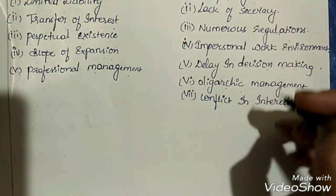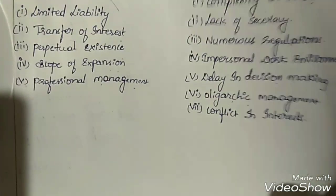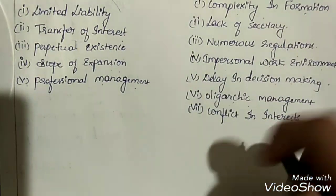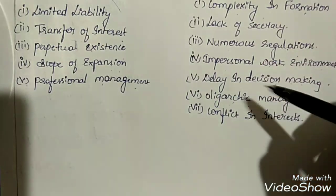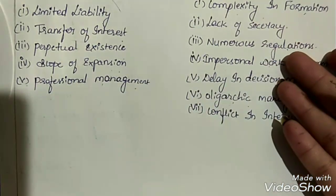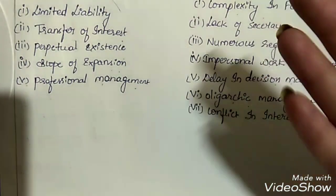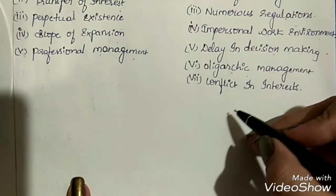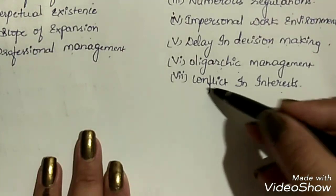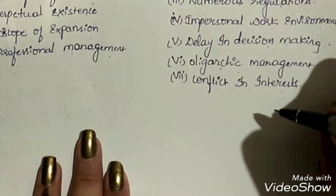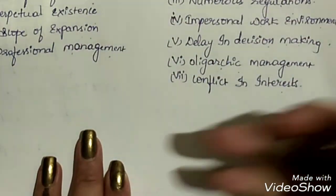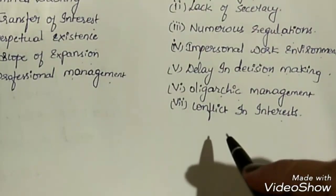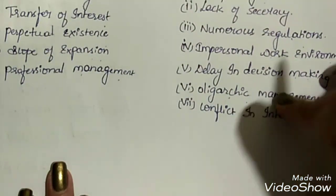Sixth demerit is oligarchic management — the board of directors manages all business activities, while shareholders are spread all over the country and cannot attend board meetings. The whole power is in the hands of the board of directors, and disinterested shareholders may transfer their shares because of this. Seventh is conflict of interests — there are differences in interest among different types of members; for example, shareholders want higher dividends while employees want higher salaries, hence there are conflicts between them. These were the demerits of joint stock company.